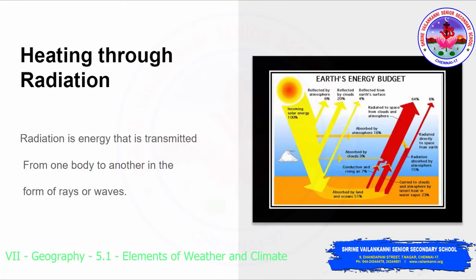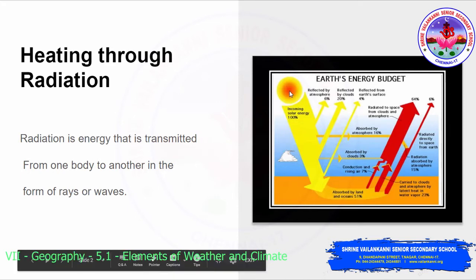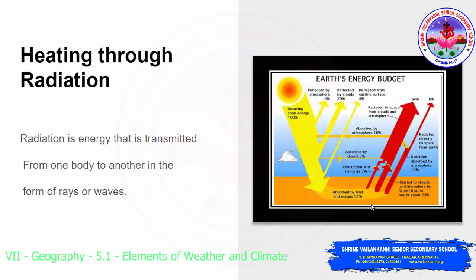This is the third method by which heat is transferred to the atmosphere from the earth's surface. Radiation is the energy that is transmitted from one body to another in the form of rays or waves. This diagram shows the earth's energy budget. From the sun, the incoming solar energy is radiated back to space, the clouds, and the atmosphere. The red color arrows show how much is radiated back. The earth absorbs heat from the sun and gives off this heat in the form of infrared rays, which are absorbed by the atmosphere and heat it up.